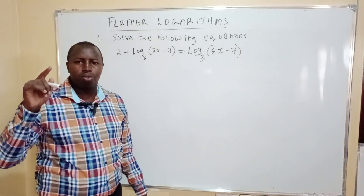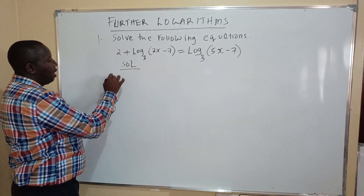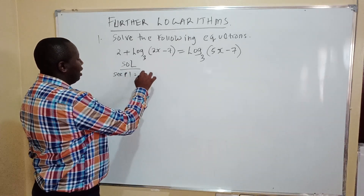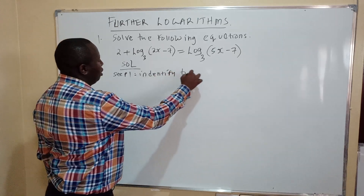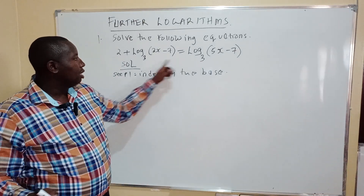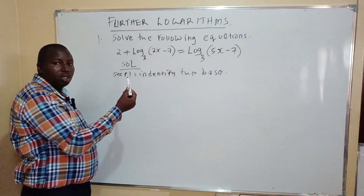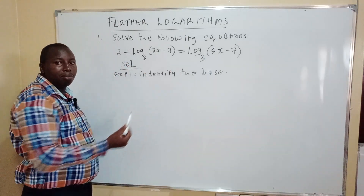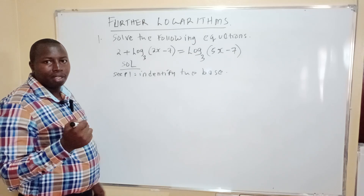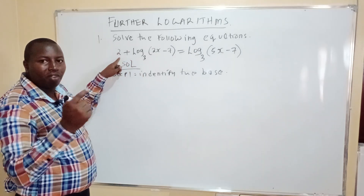Step 1 is to identify the base. This equation is written to the base 3. So you need to change the integer 2 into logarithm notation. This 2 represents the logarithm of a certain number to the base of 3, which is equal to 2.